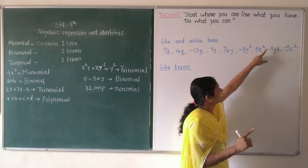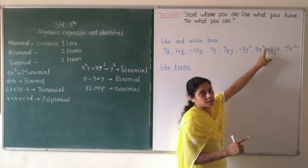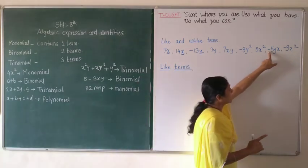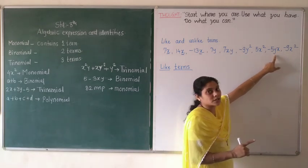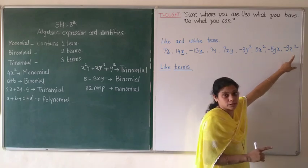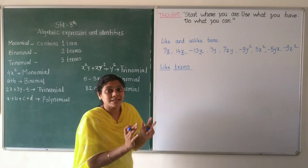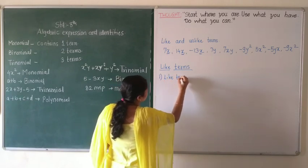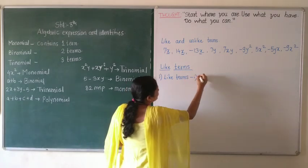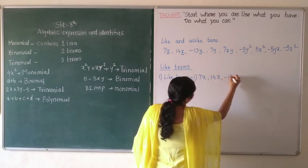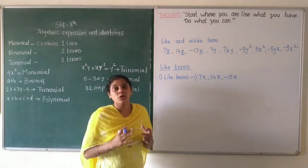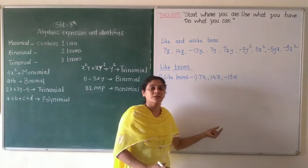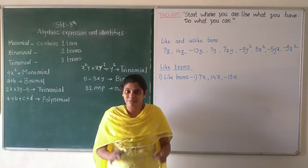Look at 7x — it contains x. Which other terms also contain only x? 14x and negative 13x. One expression also contains x but it also contains y, so it is not a like term. 5x squared also contains x but it is x squared, not just x. And negative 5 by x also has x but a different form. So the first group of like terms is: 7x, 14x, negative 13x. The alphabets must be the same; the coefficient can be different — positive or negative.